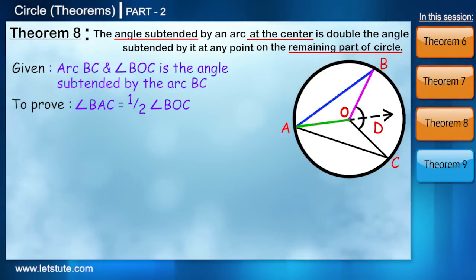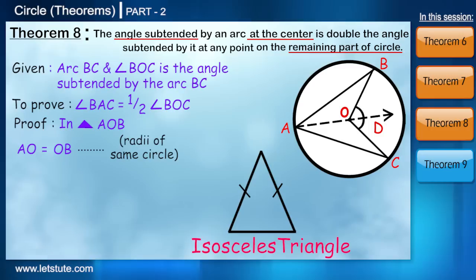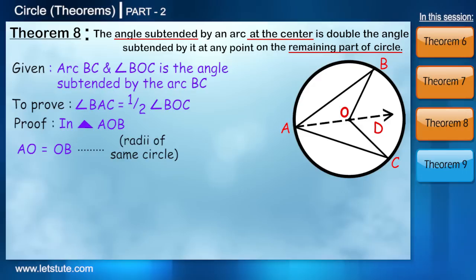Here again we can see two triangles but in here we are not going to prove them congruent. Let's have a look at the first triangle. Let's say triangle AOB. We can see that AO is equal to OB because both are the radii of the same circle. Now since these two sides of the triangle are equal, we know that their angles will also be equal. Hence we can say that angle BAO is equal to angle ABO. Now let's consider that angle BAO is equal to angle ABO is equal to X.